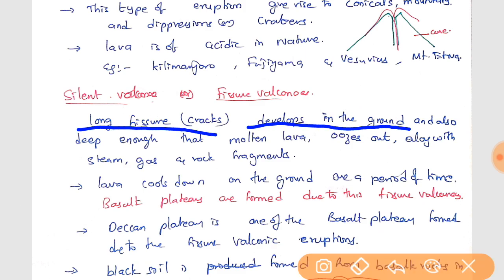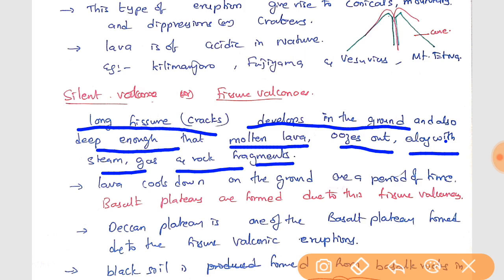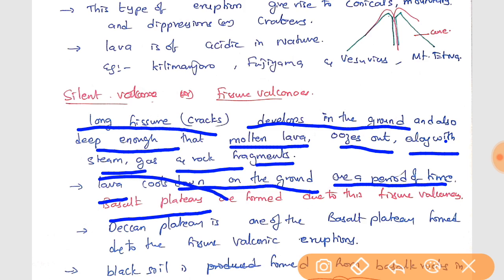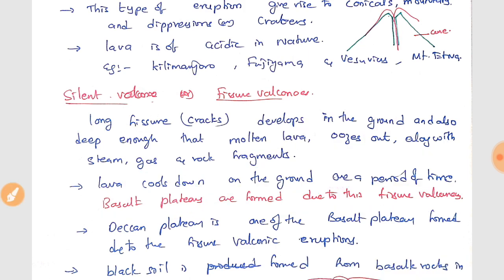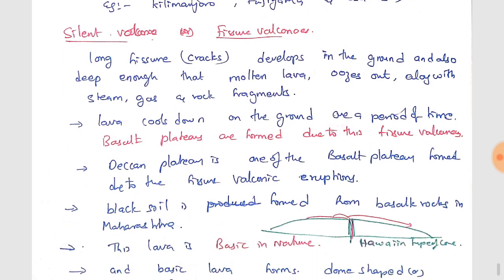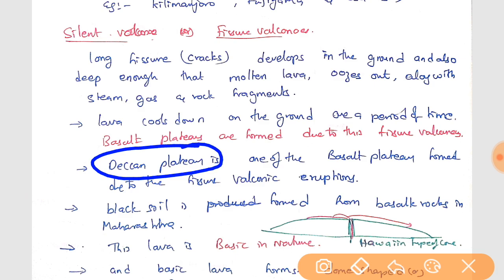Long fissures or cracks develop in the ground, deep enough that molten lava oozes out along with steam and rock fragments. This lava cools down on the ground over a period of time, and mainly basalt plateaus are formed due to these fissure volcanic eruptions. One example is our Deccan Plateau, which is a basalt plateau formed due to fissure volcanic eruptions of a basic nature.